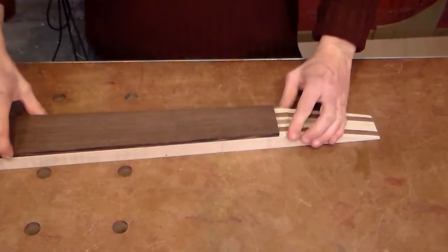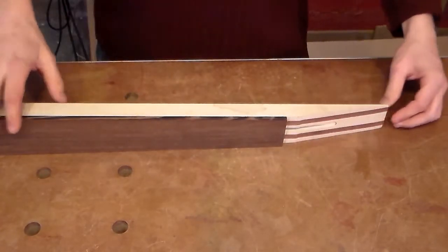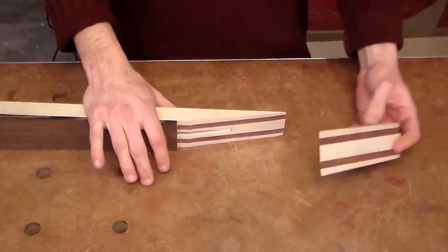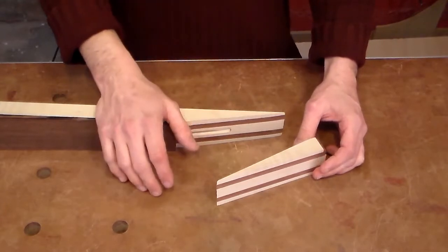Now our fingerboard is dry, and I sanded the sides flush with the neck. For the headstock, the idea is to make it strong by gluing multiple pieces of wood together.